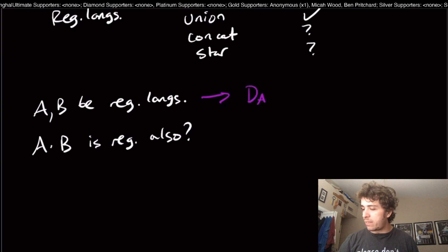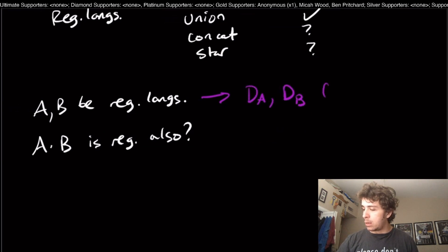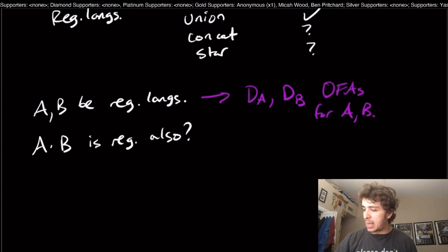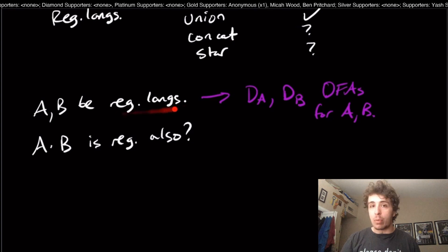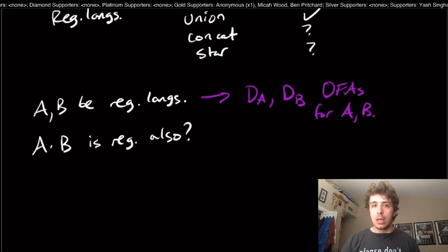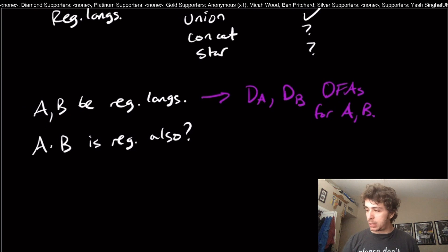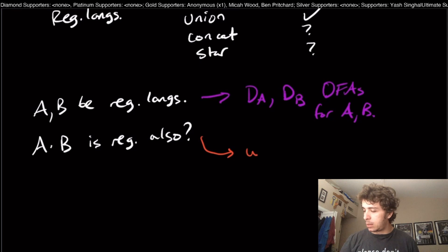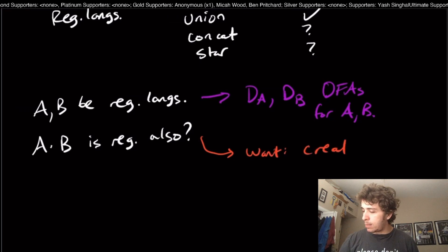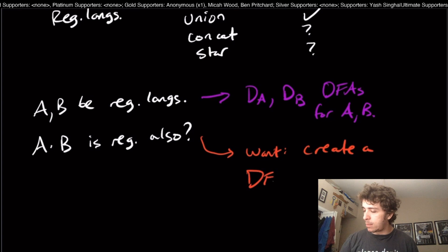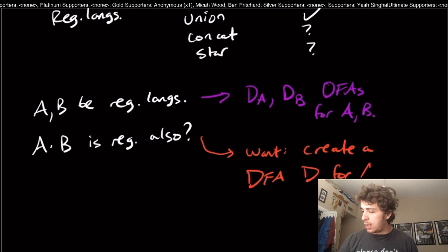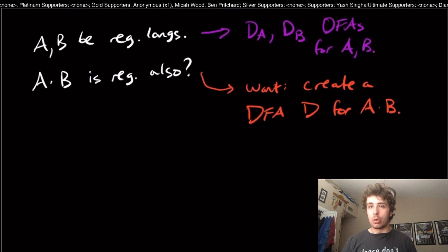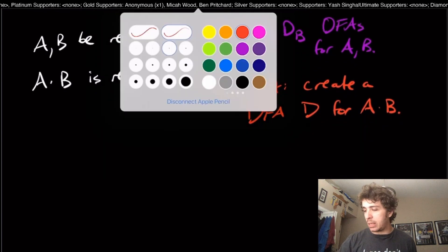What we know is that if A and B are regular languages, there are two DFAs D_A and D_B for these two languages A and B, because that's what it means to be a regular language. What we would want to do for this question is create a DFA, maybe call it D, for A concatenated with B.